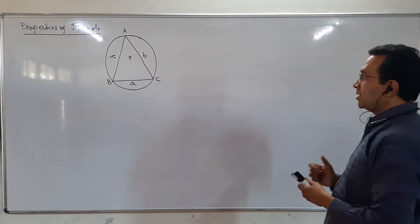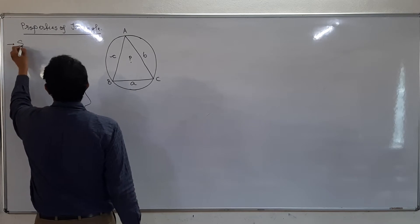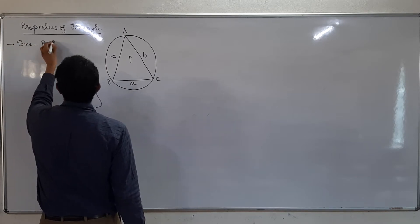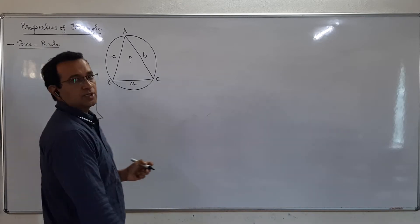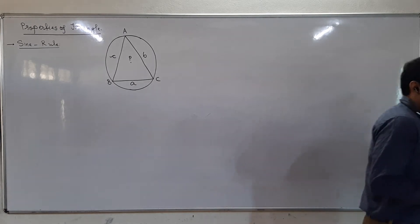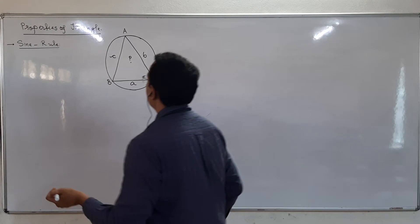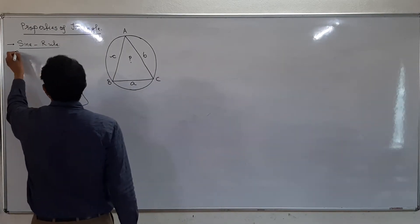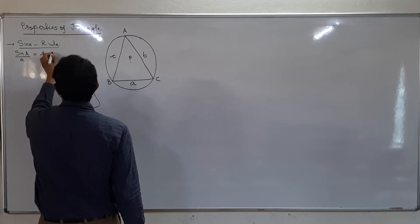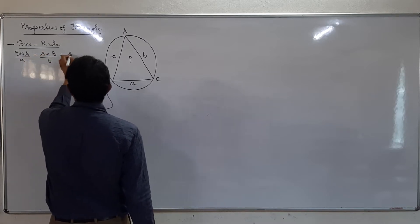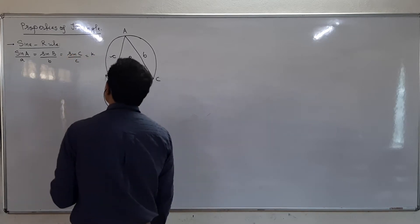The first rule or formula is the Sine Rule. It is written in two different forms. The first form is: sin A upon small a is equal to sin B upon small b is equal to sin C upon small c, which is equal to some constant k.